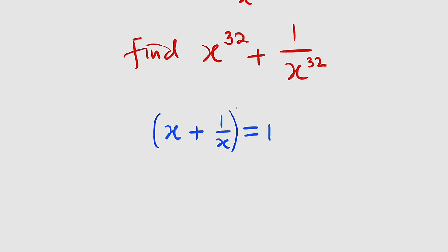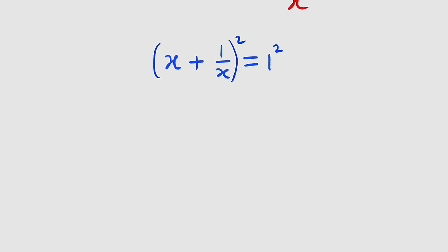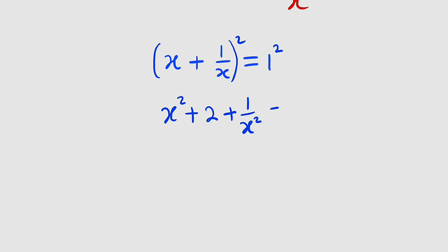If you square the left-hand side, you have to also square the right-hand side. On the left-hand side, if you expand the binomial, you have the first term squared plus 2 times the first term times the second term. 2 times x is 2x, and 2x multiplied by 1 divided by x gives us just 2. The second term squared will be 1 divided by x squared. On the right-hand side, we have 1 squared equal to 1.